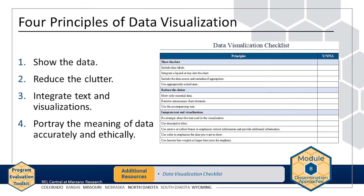Regardless of the type of data visualization, there are four principles related to enhancing a display and making it easier to read and interpret: show the data, reduce the clutter, integrate text and visualizations, and portray the meaning of the data accurately and ethically. You can use the data visualization checklist, available on the Resources page of the website, to check your data visualizations against these principles. These principles and the checklist are adapted from the Forum Guide to Data Visualization, referenced earlier in this chapter.